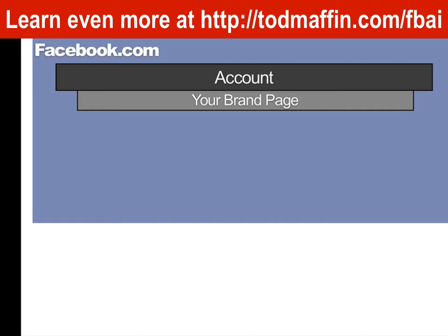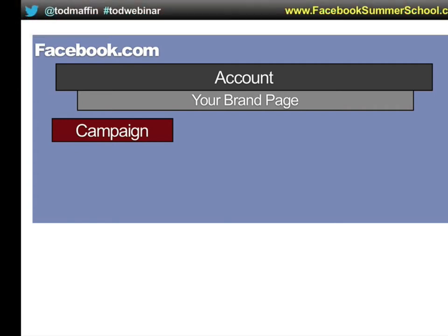Think about it like placing a newspaper ad. The ad you place to get people who want to sell their home is going to have different text and be in a different place than the ad for recruiting staff. Each of these are called campaigns inside Facebook. A campaign is just a goal — a goal of a group of people you want to reach. So the goal of this particular campaign would be to find people who want to sell their existing condos.